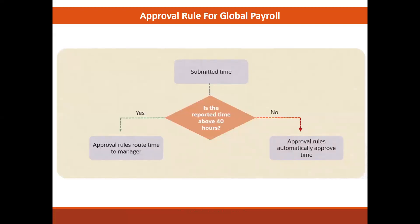Once a time card has been submitted, it goes through the approval process. To get you started, we deliver a rule that automatically approves a time card submitted with 40 hours or less for the week. If it is over 40 hours for the week, it routes to the line manager for approval. Not everyone's work schedule is 40 hours a week, so this rule does not apply for every situation. Most importantly, time has to be approved before it can be transferred to global payroll.